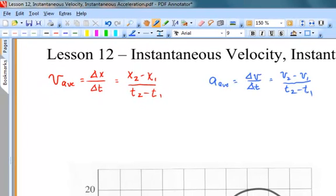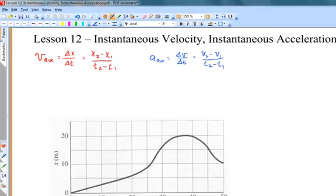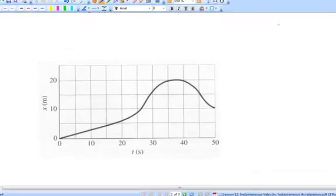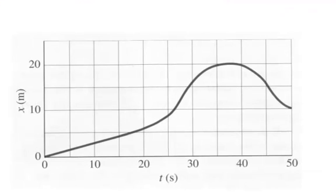When it comes time to talk about instantaneous velocity and instantaneous acceleration, these time intervals will be shrunk down to become very small instants. Many times we'll be examining motion graphs to calculate these quantities. Here's a motion graph you saw before in Lesson 10, in which we looked at average velocity and average acceleration. Given a position versus time graph, to find the average velocity, we chose two points separated by a time interval and found the slope of the line between those two points, because the slope of the line on an x versus t graph is the velocity.